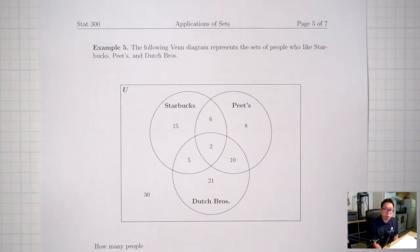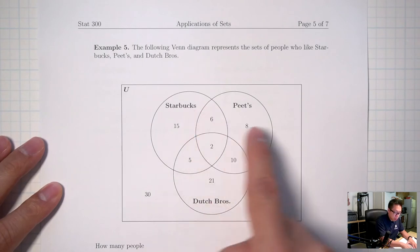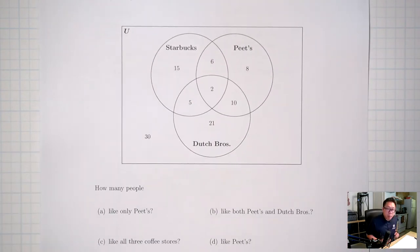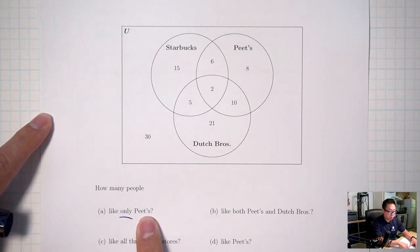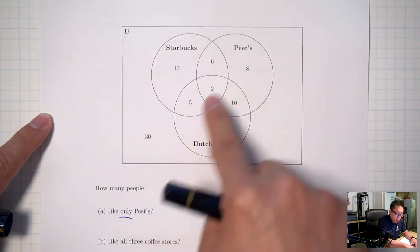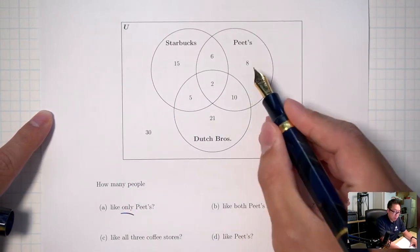Example 5. In the first four examples we dealt with Venn diagrams with only two circles. Here we have a Venn diagram with three circles representing people who like Starbucks, Pete's, and Dutch Bros. How many people like only Pete's? Only means inside Pete's but outside everything else — that's just 8.